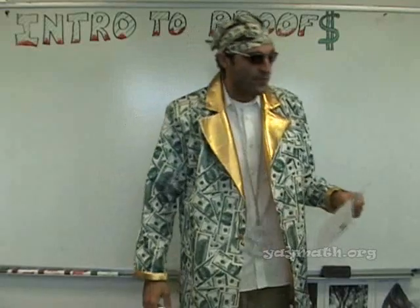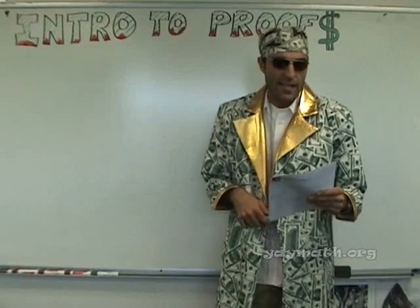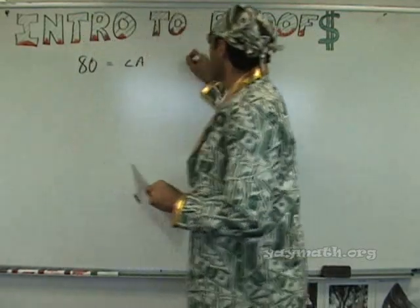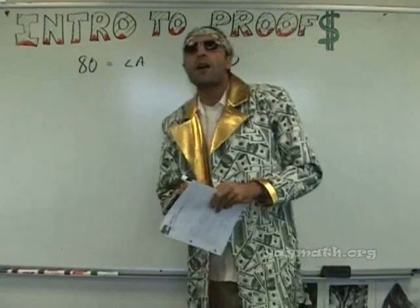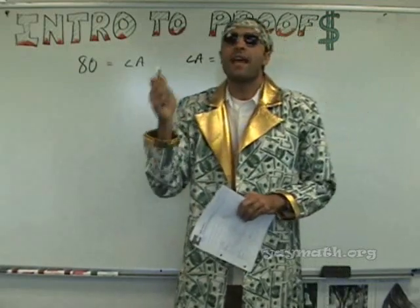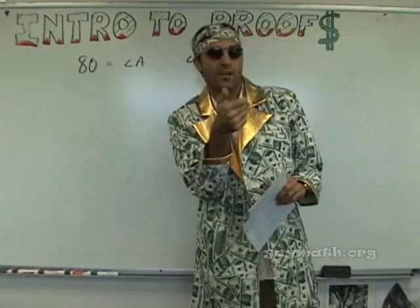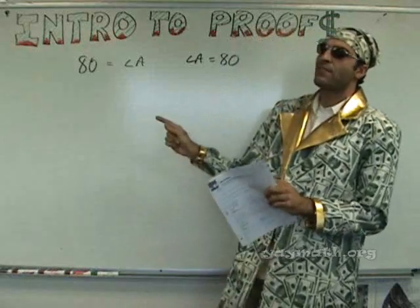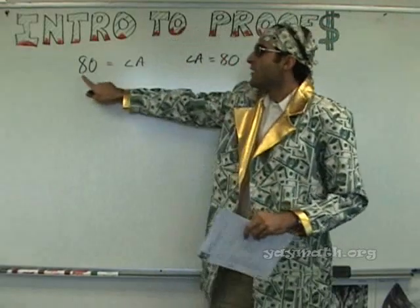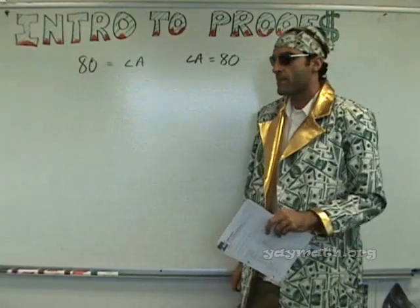So let's jump right into it. First things first, we need to know our properties. If you're looking at number one on the sheet — if 80 equals measure of angle A, then angle A equals 80. Does anyone know what property this is? Reflexive? It's almost reflexive, but not quite — reflexive would be A equals A. Commutative? Commutative would be A plus B equals B plus A. Transitive? No, not transitive. Symmetric property — yes! The symmetric property is: if A equals B, then B equals A. Notice they've switched the angles.